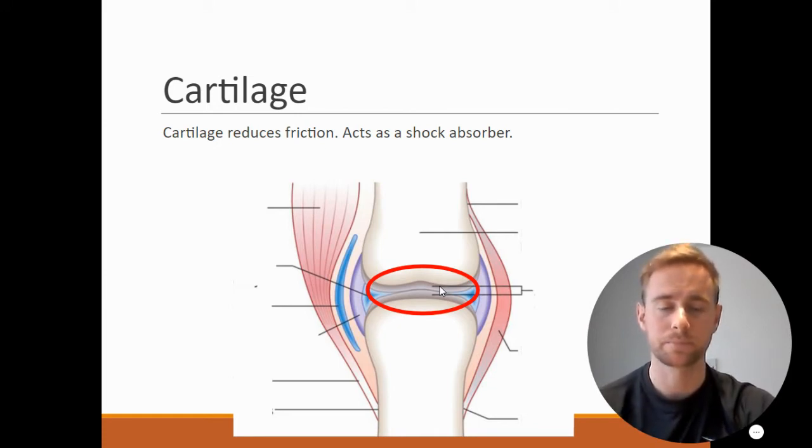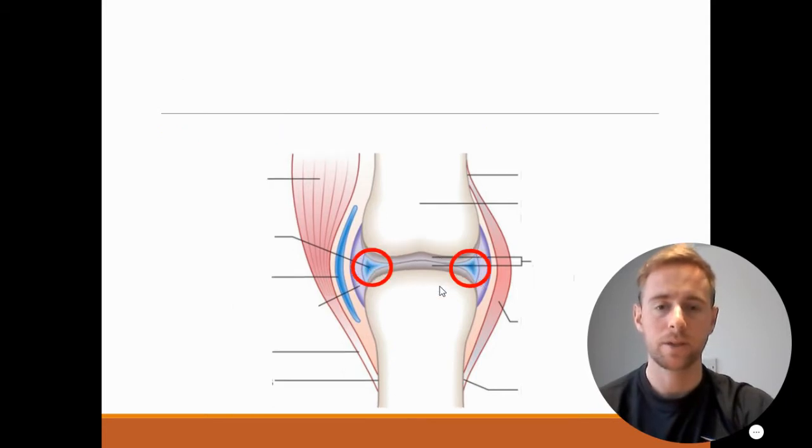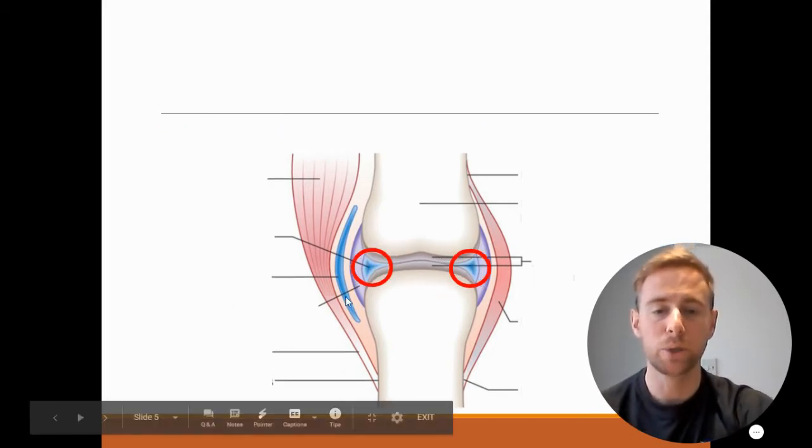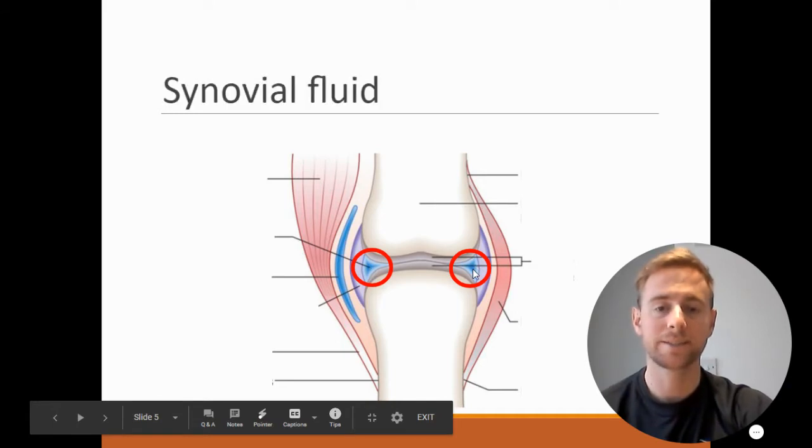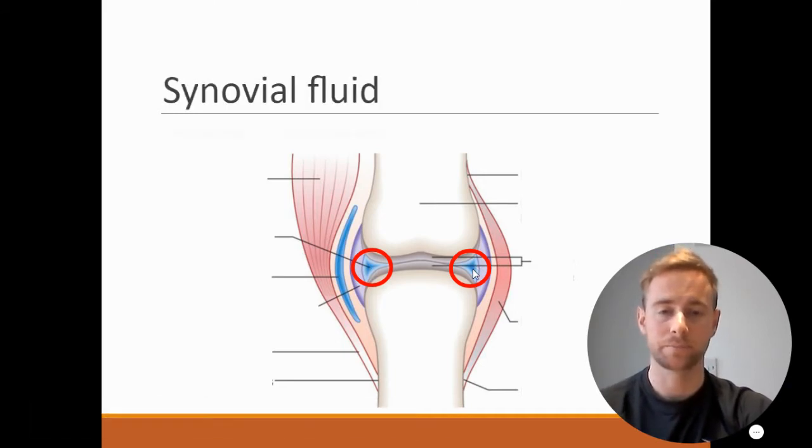Next we are looking at the blue fluid here. With this blue fluid, that is the synovial fluid. What the role of this is, is to lubricate the joint so it allows it to move freely without any pain.